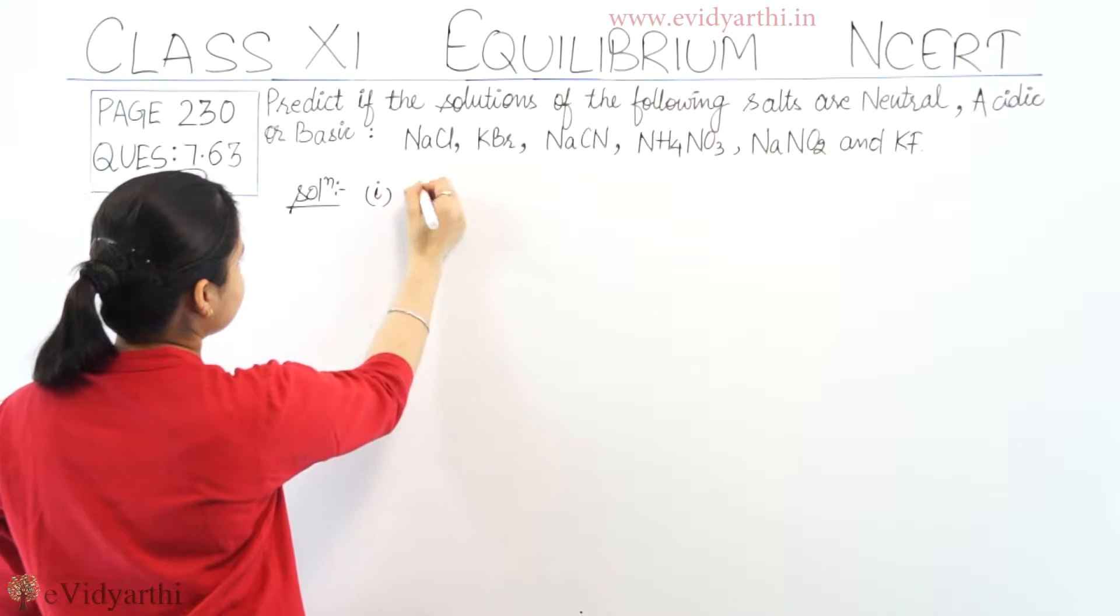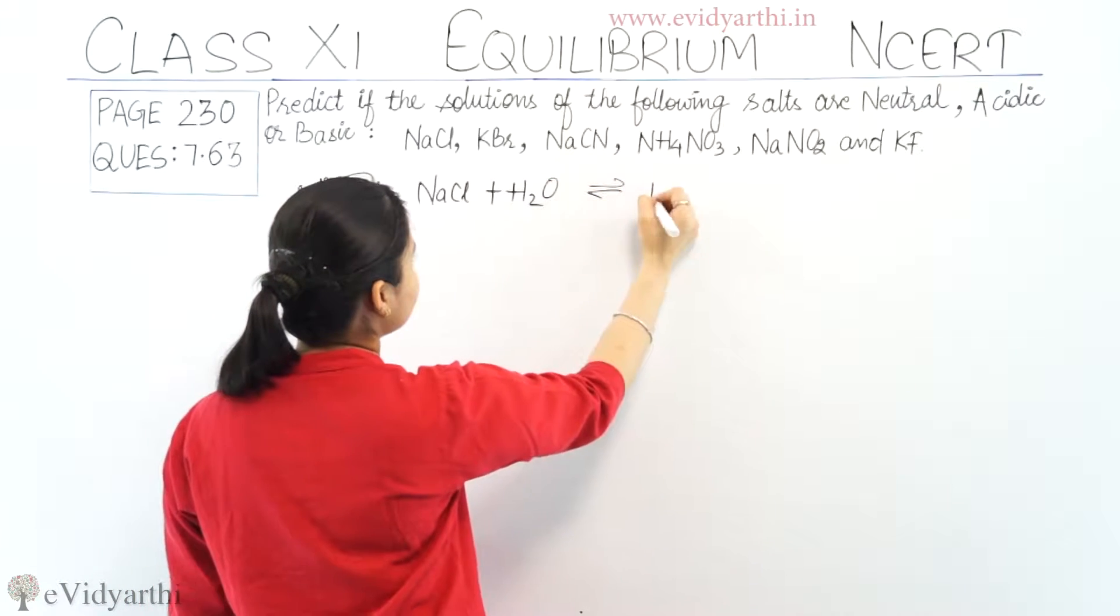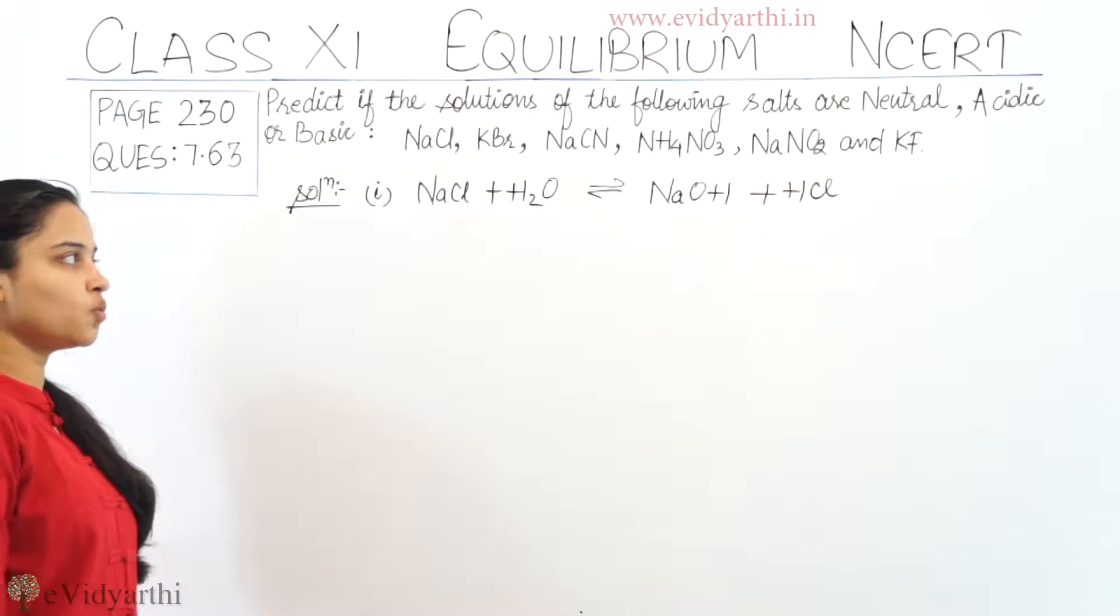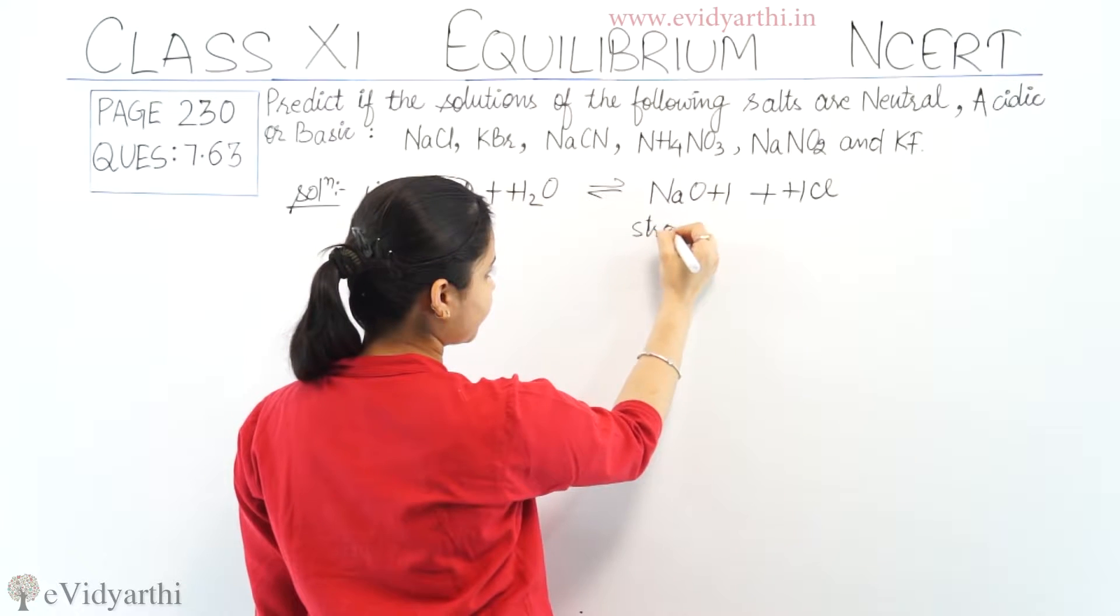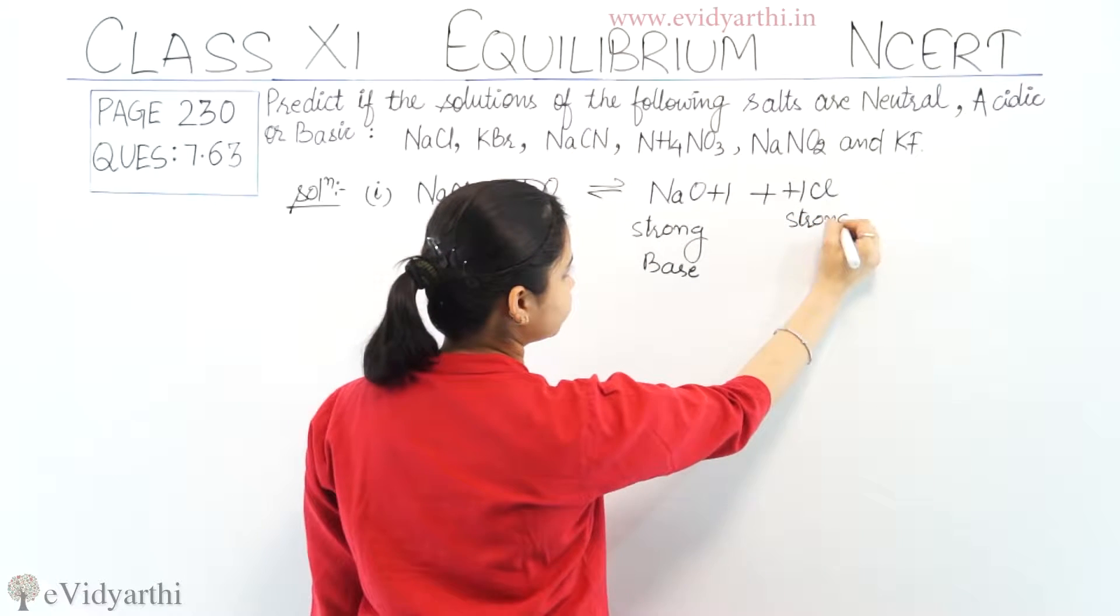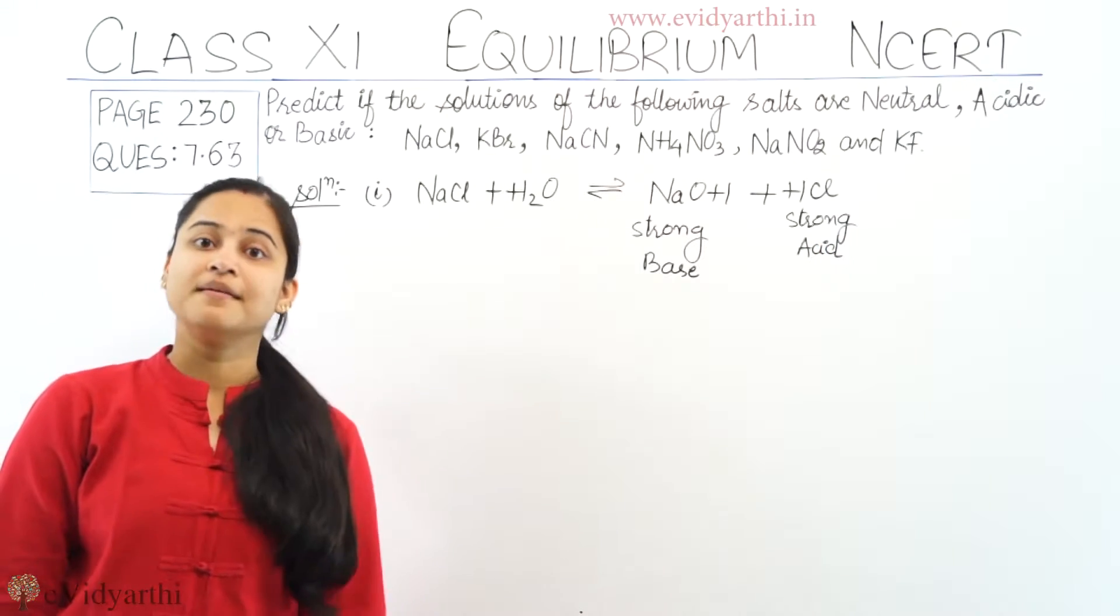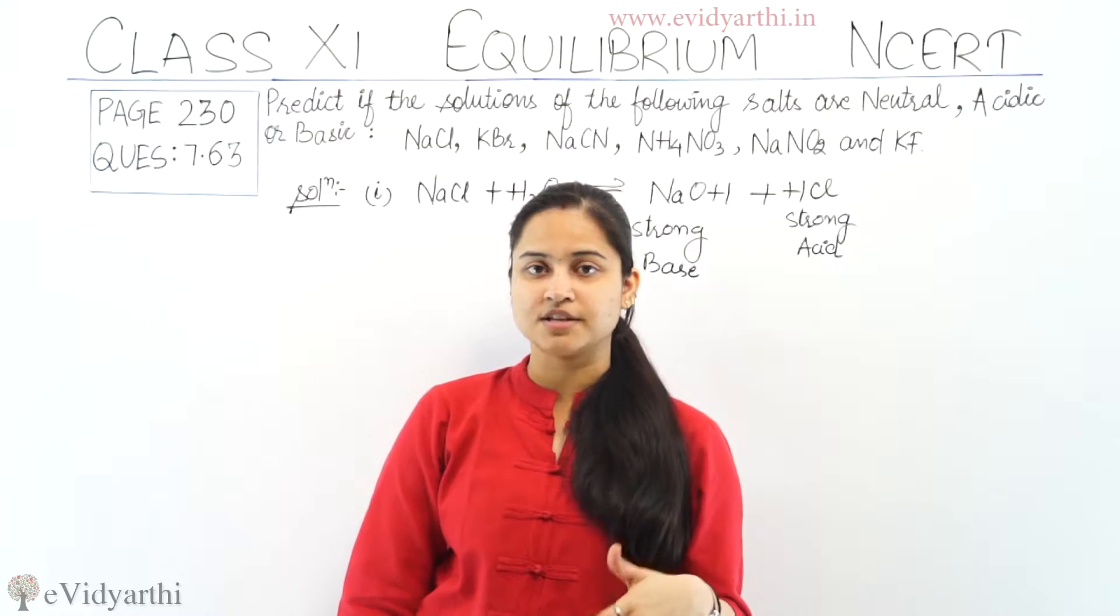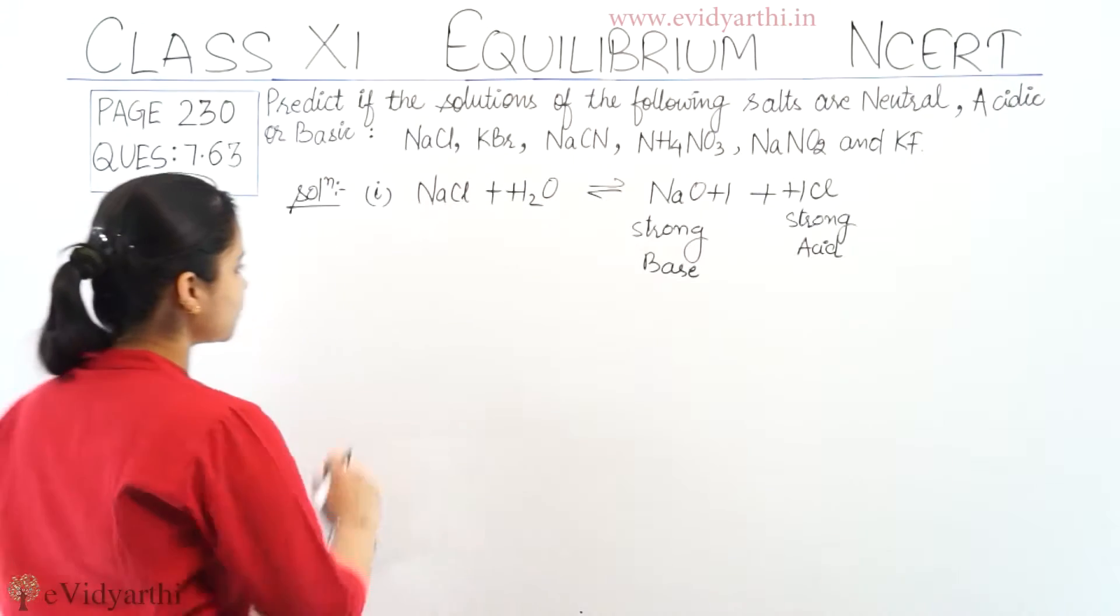Number 1, NaCl. When we put NaCl in water, NaCl plus water is in equilibrium with NaOH plus HCl. When I put NaCl in water, I got sodium hydroxide NaOH plus HCl. And sodium hydroxide is a strong base. HCl is a strong acid. So if I put NaCl in water and I find strong acid as well as strong base, I can say that NaCl in water would be neutral. So it is a neutral solution.